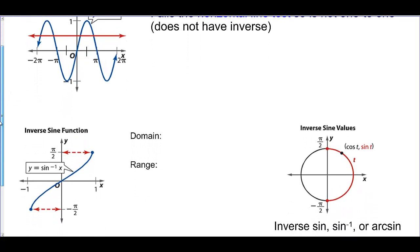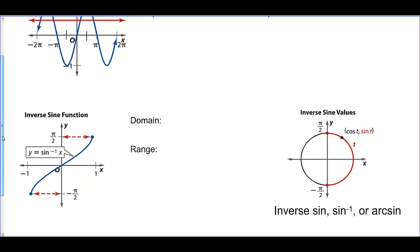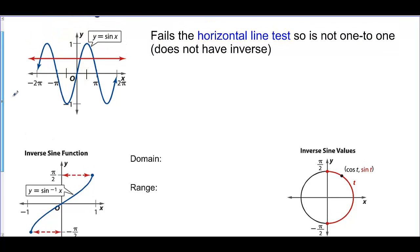To find inverses, we switch x and y. So the y values that were 1 and negative 1 become the x values. If we graphed sine, we would keep graphing and it would be this wave going vertically instead of horizontally. That fails the vertical line test, so again we don't have a function.